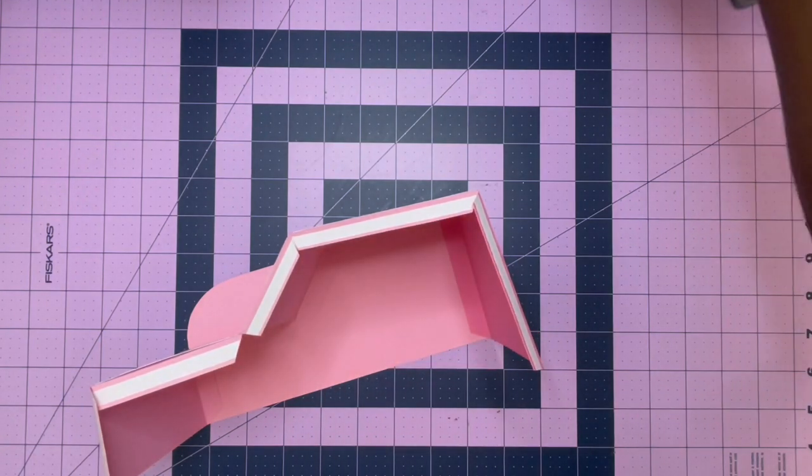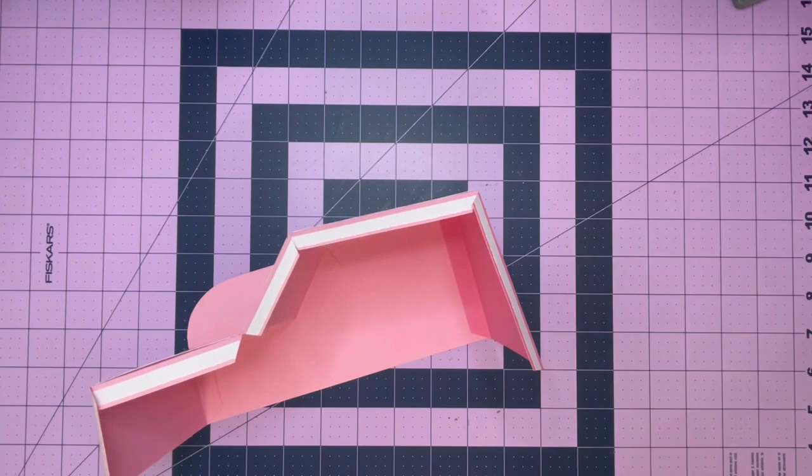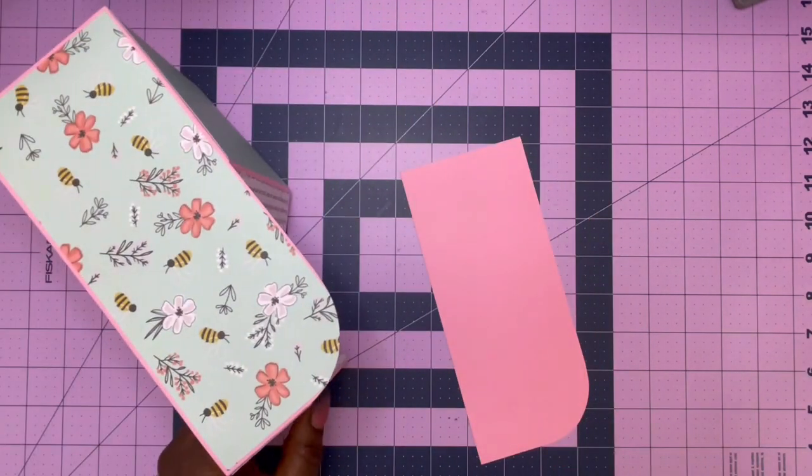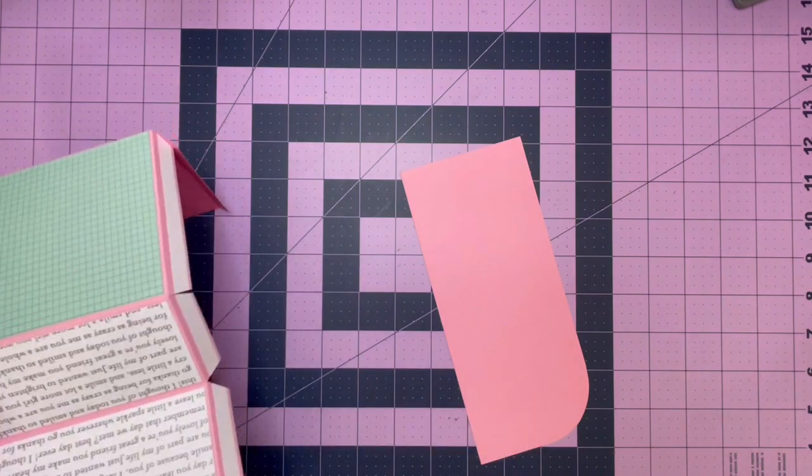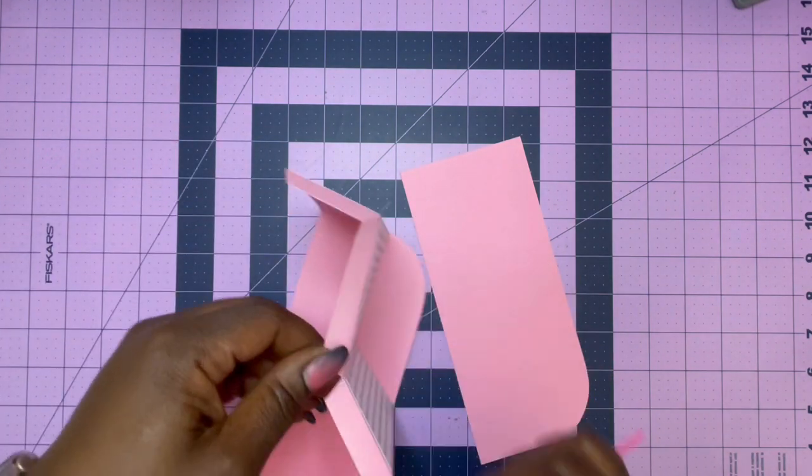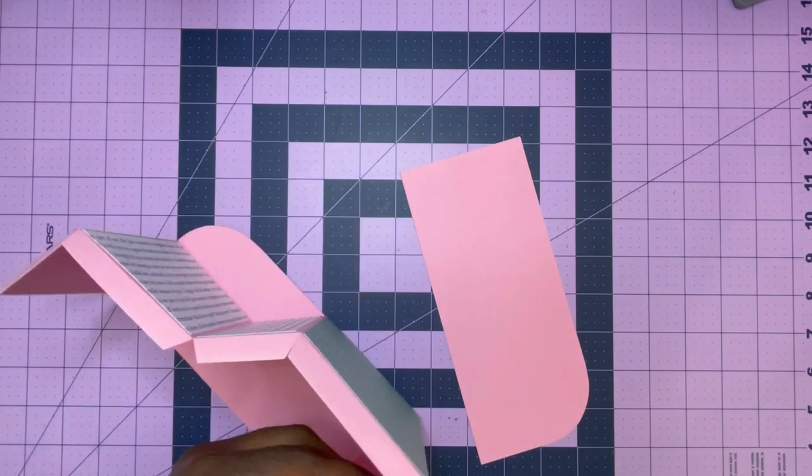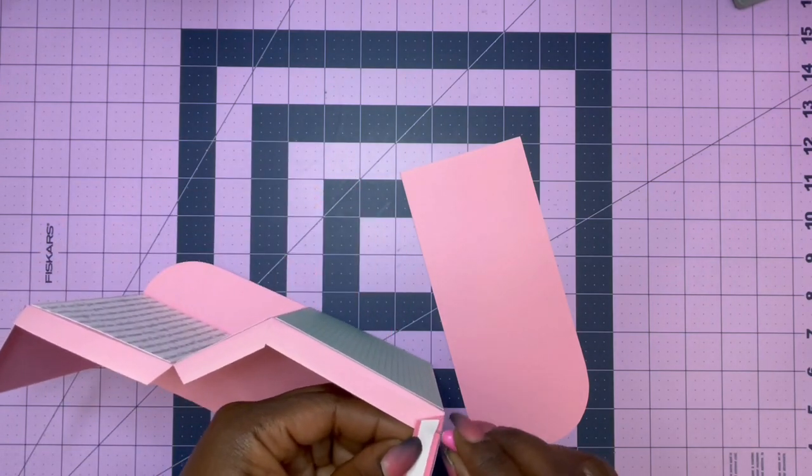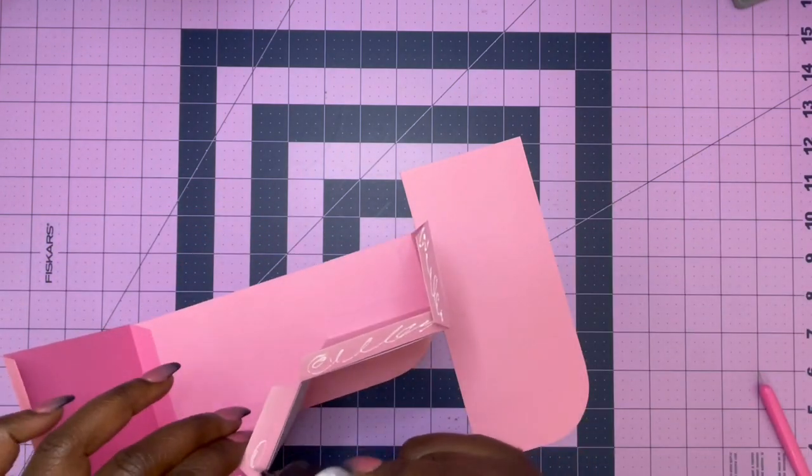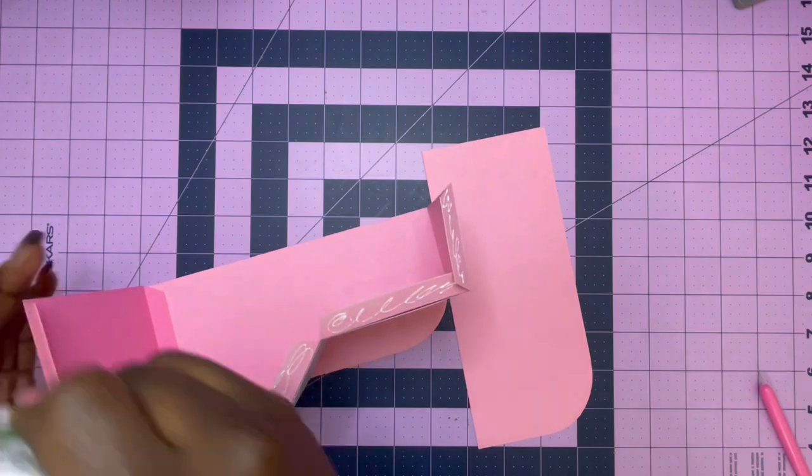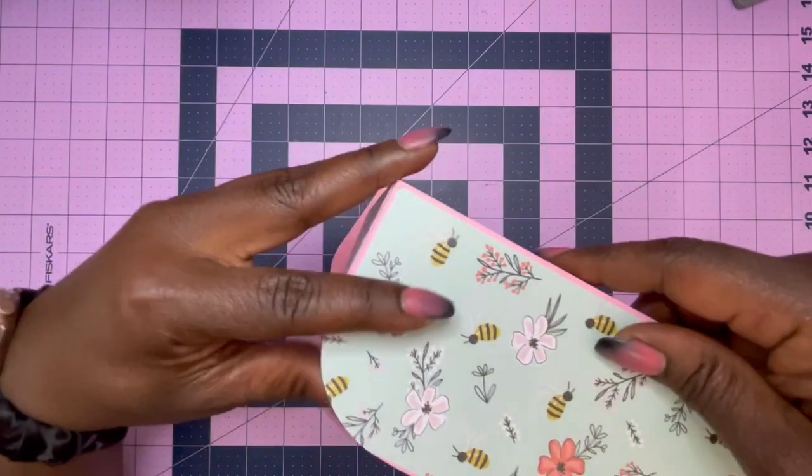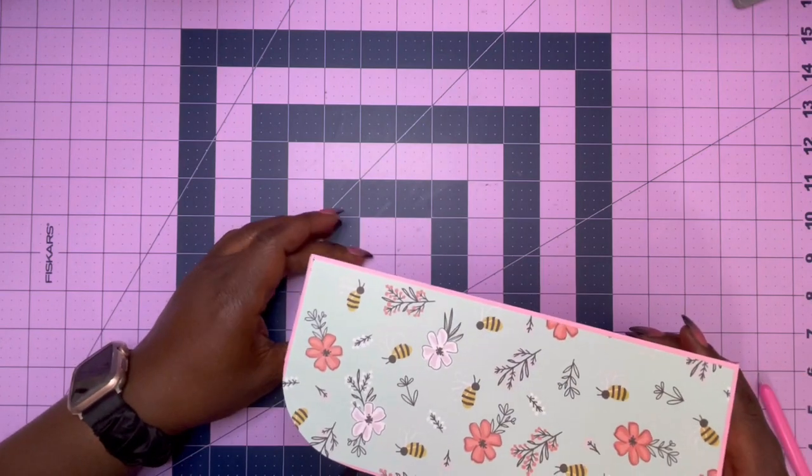Because we already did the first one, you already have the idea of how it all goes together. So I'm just going to remove the tape and add my glue on all of my little flaps and attach it, still making sure that I have everything properly aligned. You want to make sure that you are right before that score line, and then make sure that your bottom piece, which would be your fourth panel, is lined up to your corner so everything aligns up properly.